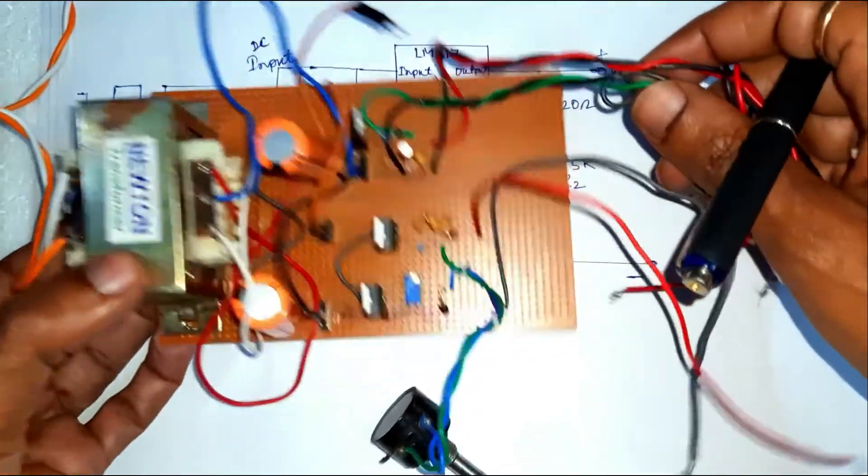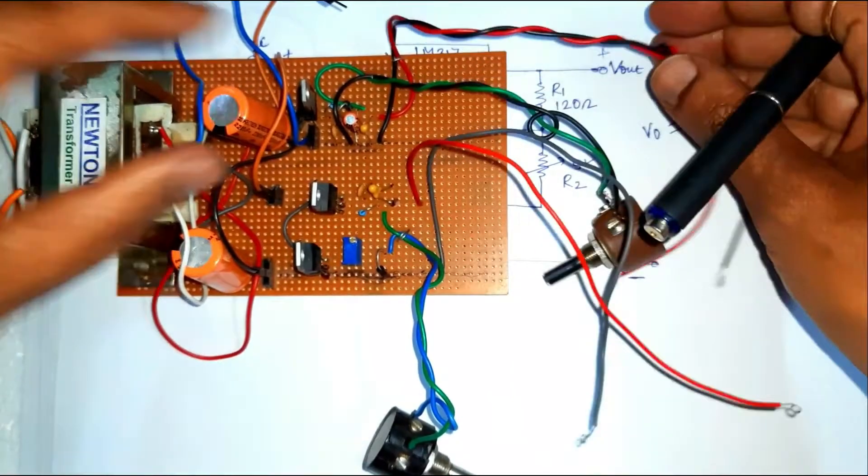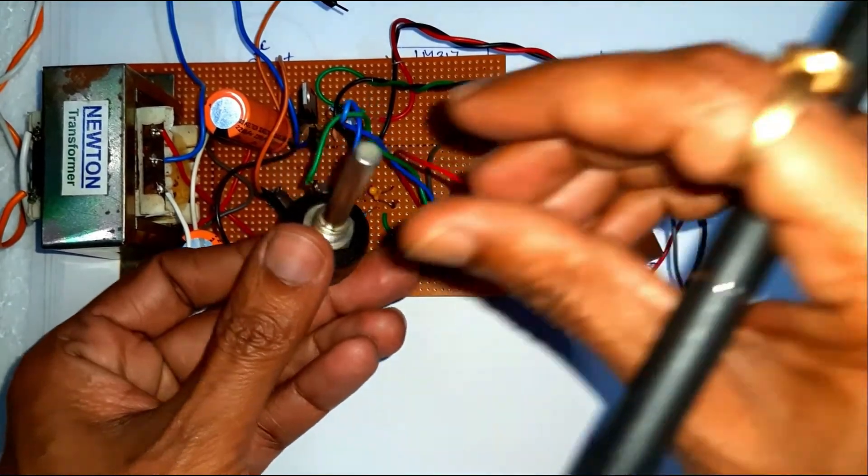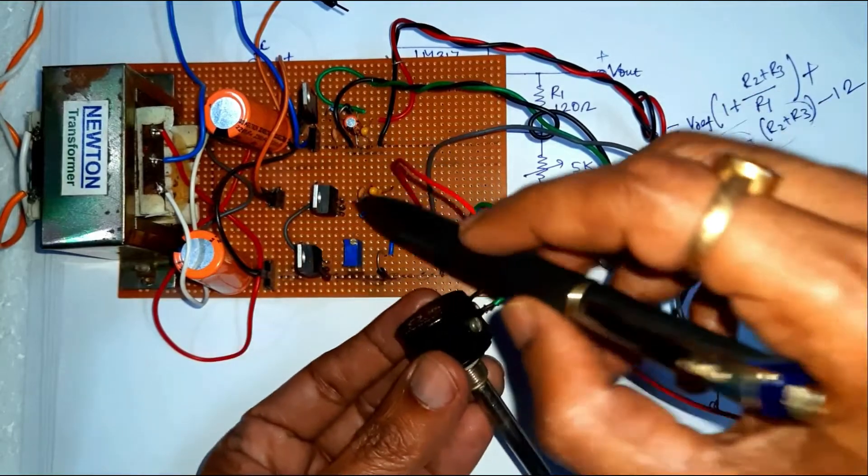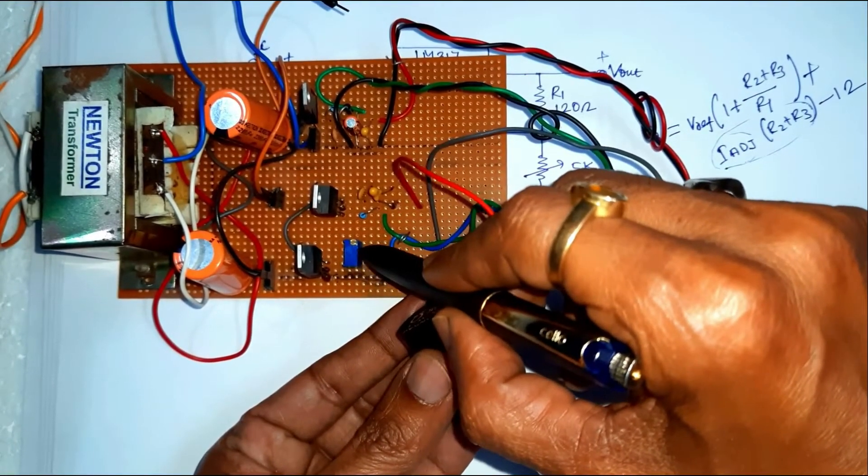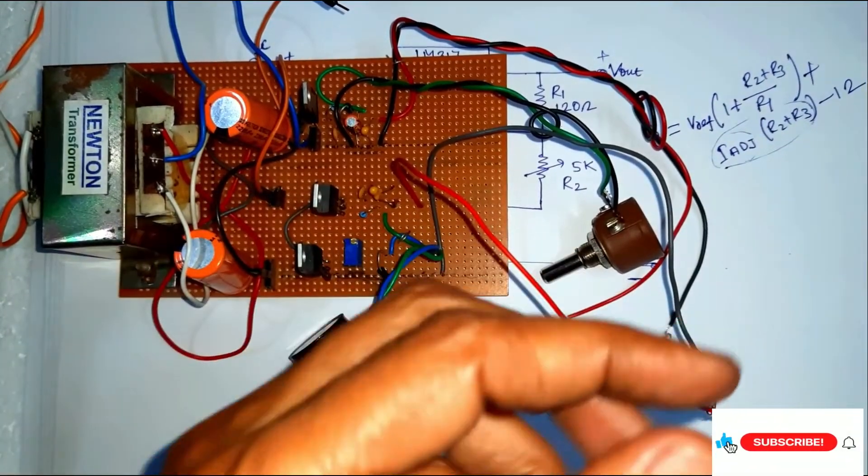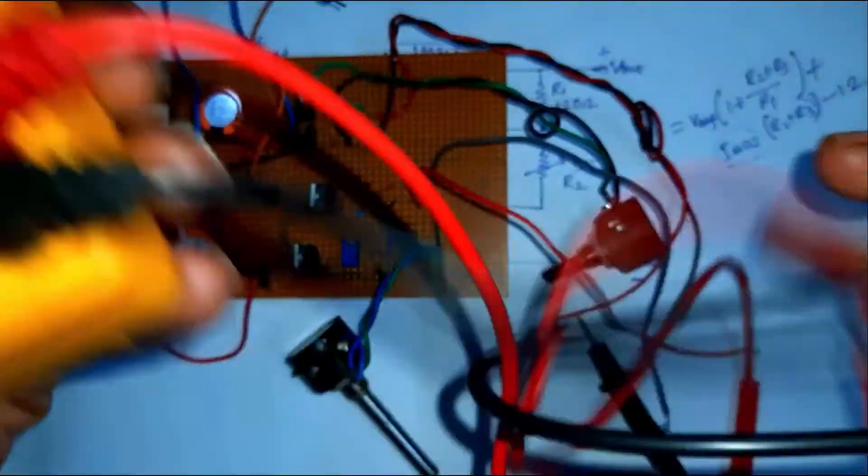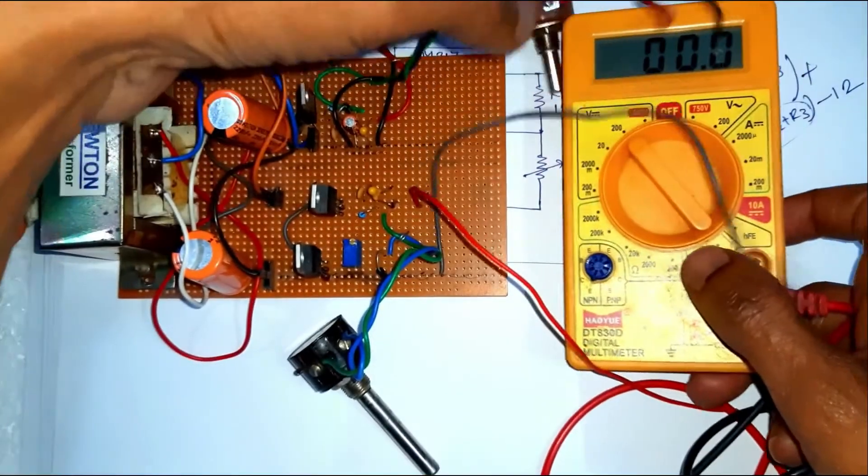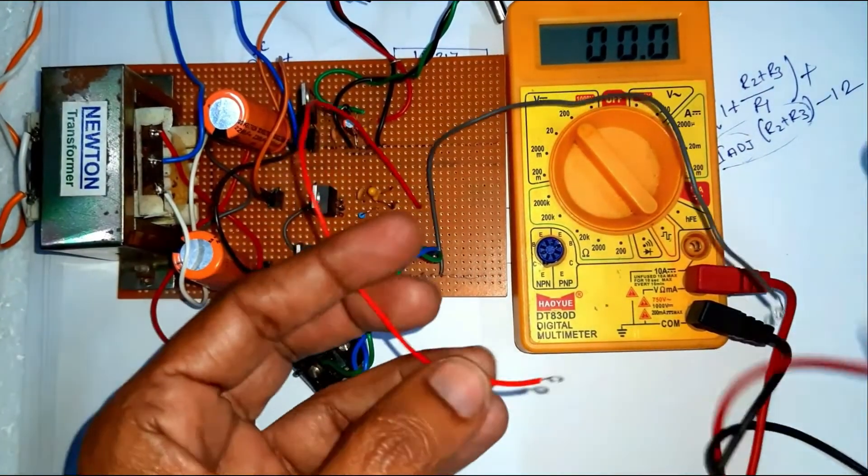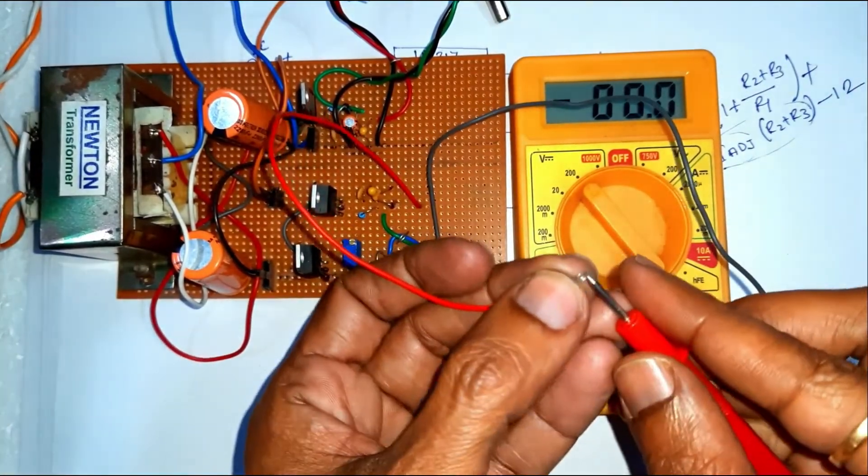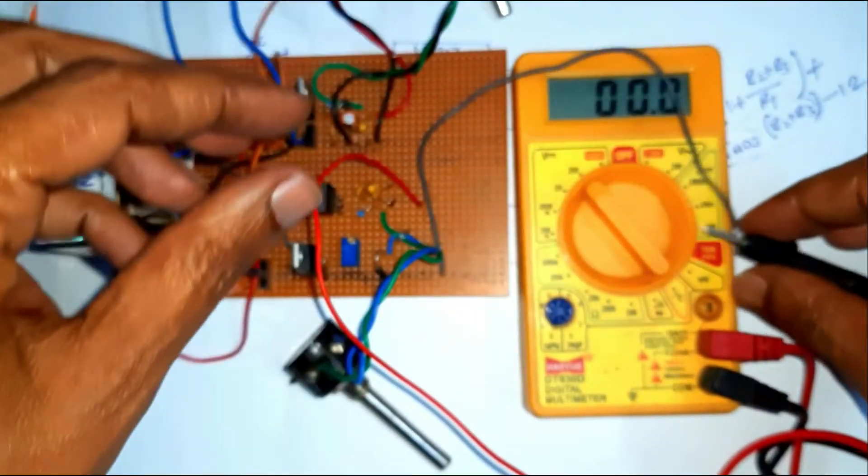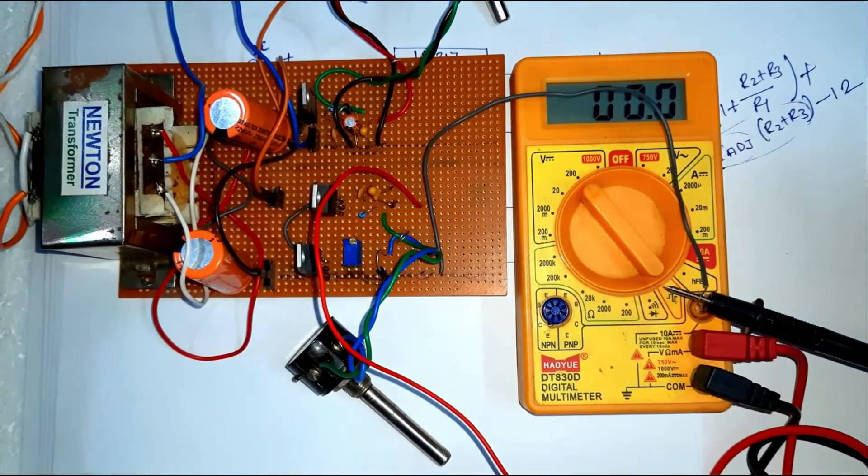Now, check the power supply. First, no load condition. This is the resistance, variable resistance R2, R1 and R3 variable resistance. Next, we connect this multimeter as a voltmeter to measure the output voltage. Now, this is the no load condition, switch on the circuit.